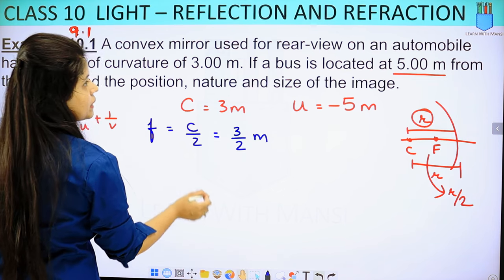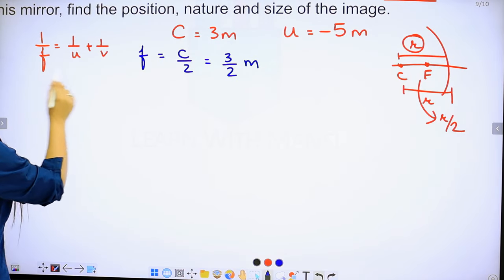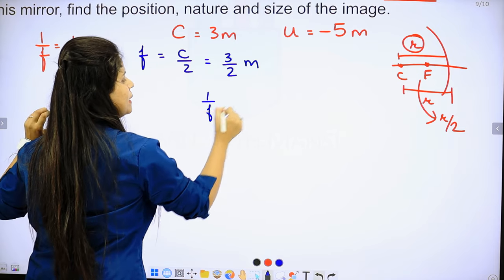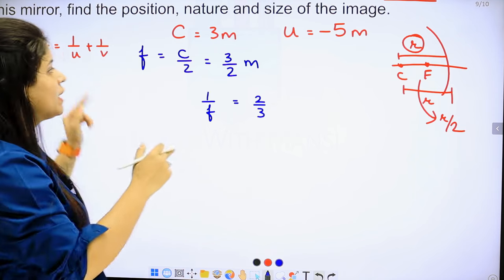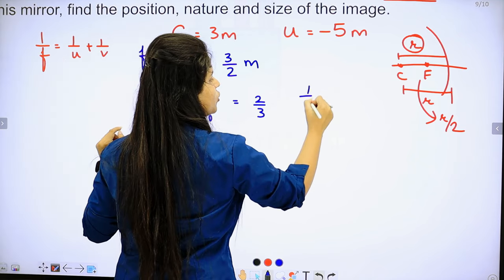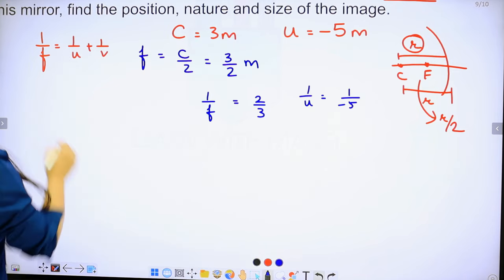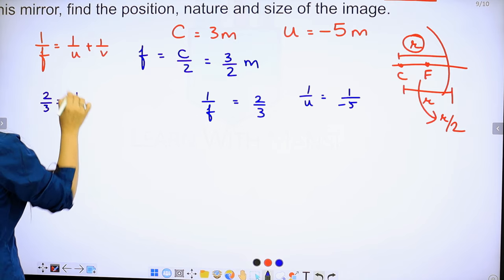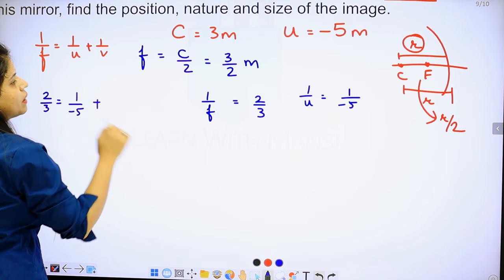Write the formula here. Now, what will be 1 upon F? If F is 3 upon 2, then 1 upon F means its reciprocal which is 2 upon 3. 1 upon U will be 1 upon minus 5. Clear? Values put karlo. 1 upon F means 2 upon 3 equals to 1 upon U is 1 upon minus 5 then plus 1 upon V.